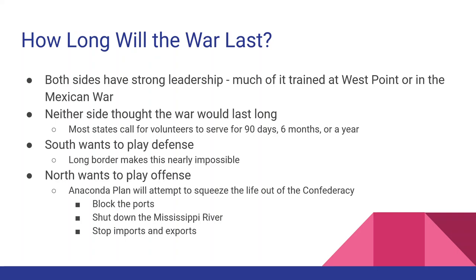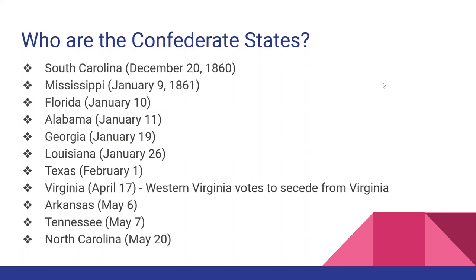Neither the North nor the South thought the war was going to last very long. The South just wants to outlast the North, while the North wants to make the South submit. The North comes up with the Anaconda Plan, which is designed to squeeze the life out of the Confederacy in three parts. As for Virginia, when it secedes several western counties break away from the state — that's where West Virginia comes from, parts of Virginia that did not want to join the Confederacy.